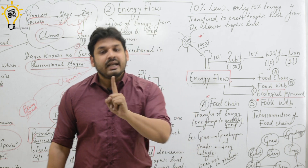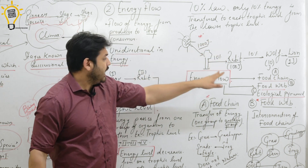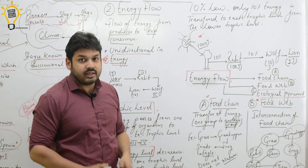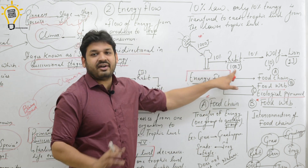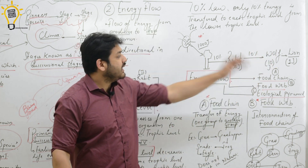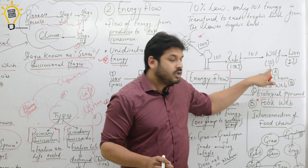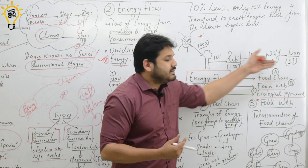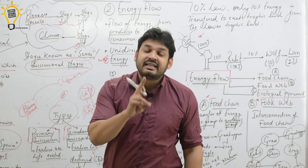For example, the sun provides energy to plants. From plants, 10% energy is transferred to the next level, and 90% is lost. From plants to rabbit, 10% energy is transferred — so if plants have 100 joules, rabbit gets 10 joules. Then wolf gets 10% of that, which is 1 joule — and so on as energy flows along the chain.